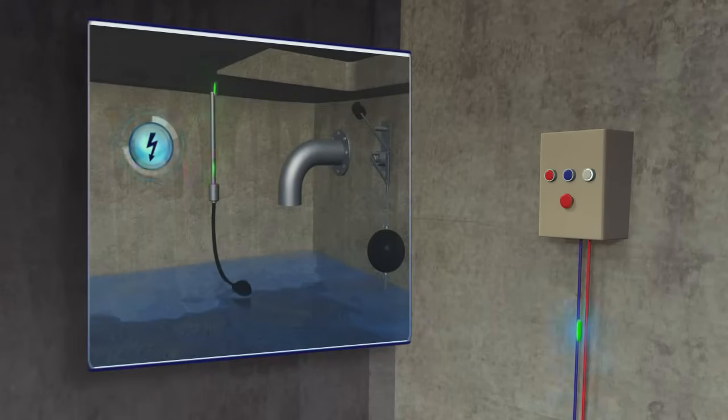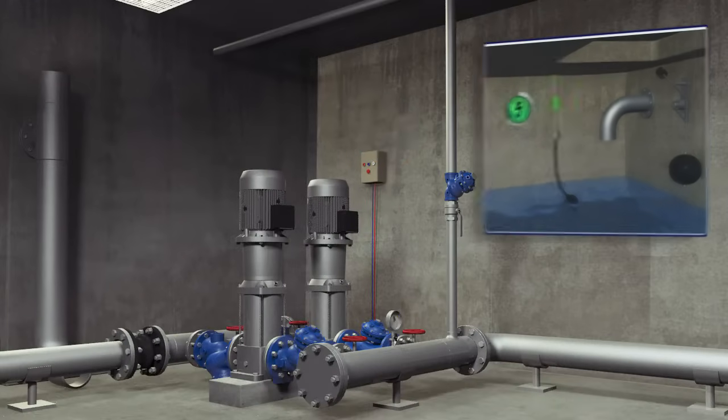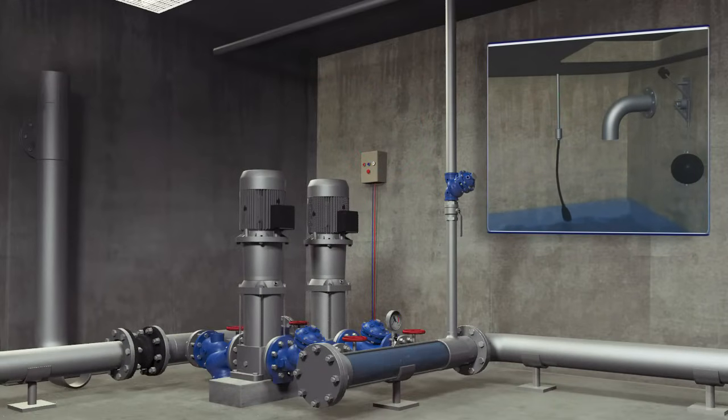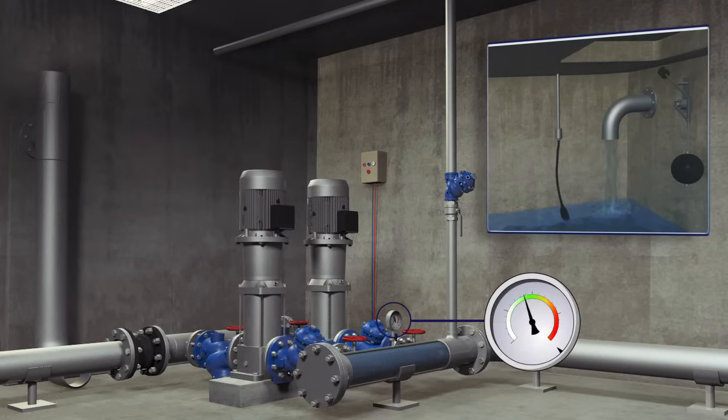When the level in the top reservoir drops, the reservoir's electrical float sends a start command to the control board in the basement. When the pump is operating, pressure in the downstream line rises and the upper reservoir is filled.